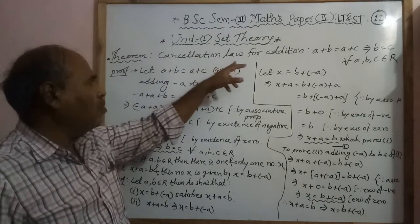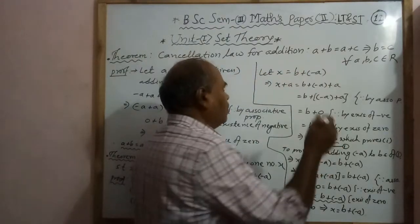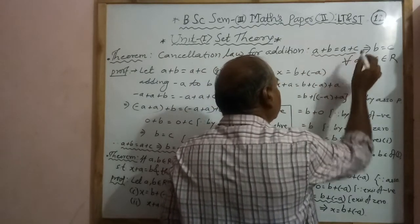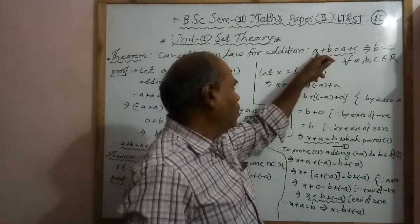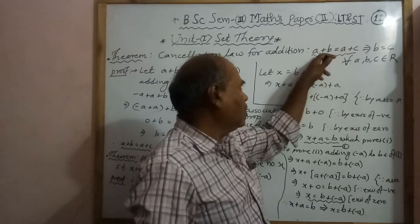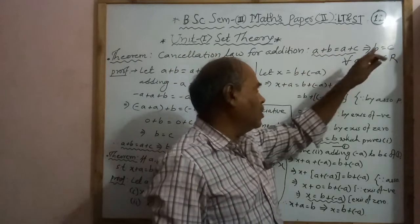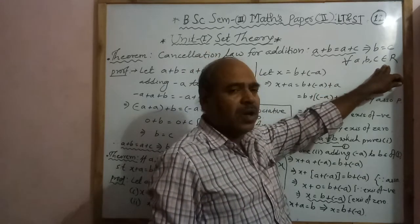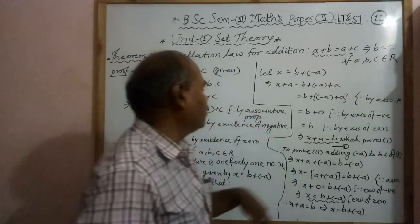Cancellation law for addition: the law is given by — if A plus B equals A plus C, then B equals C. Canceling A, we get the cancellation law: B equal to C, for every A, B, C belonging to real numbers R.